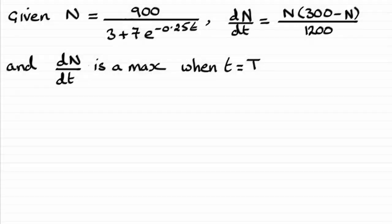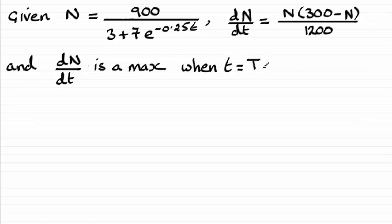For this part of the question, we were given the equation for n in terms of t, and we previously worked out the rate of growth dn/dt equaling n times 300 minus n, all over 1200. Now we're told that the rate of growth dn/dt is a maximum when t equals T, after t months. So we've got to find out what the value of t is.